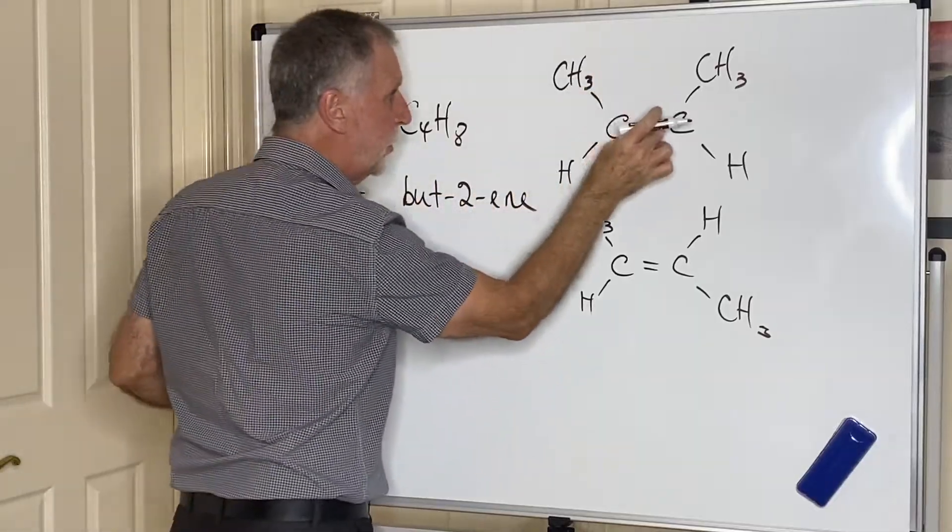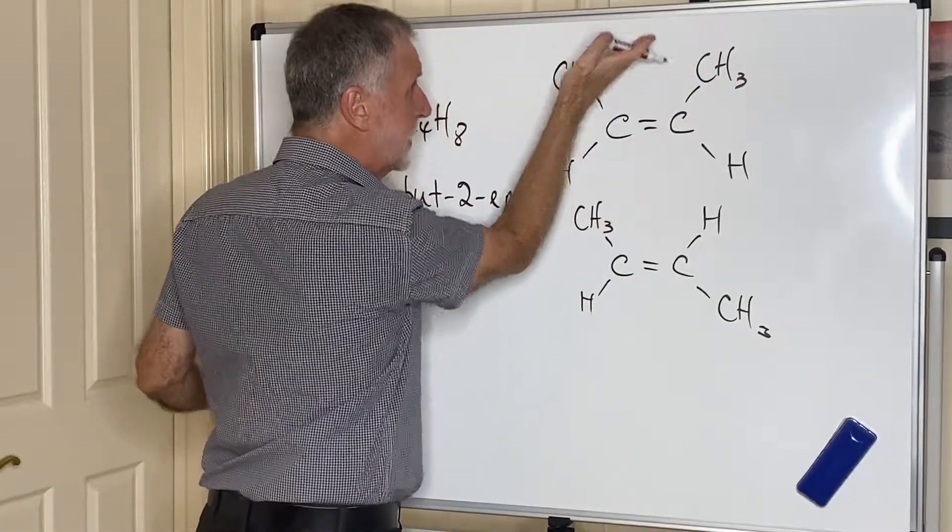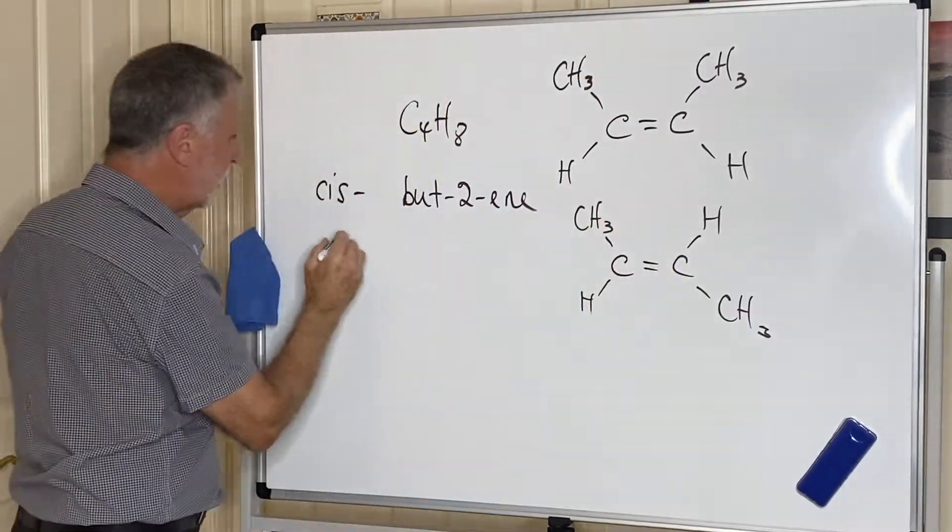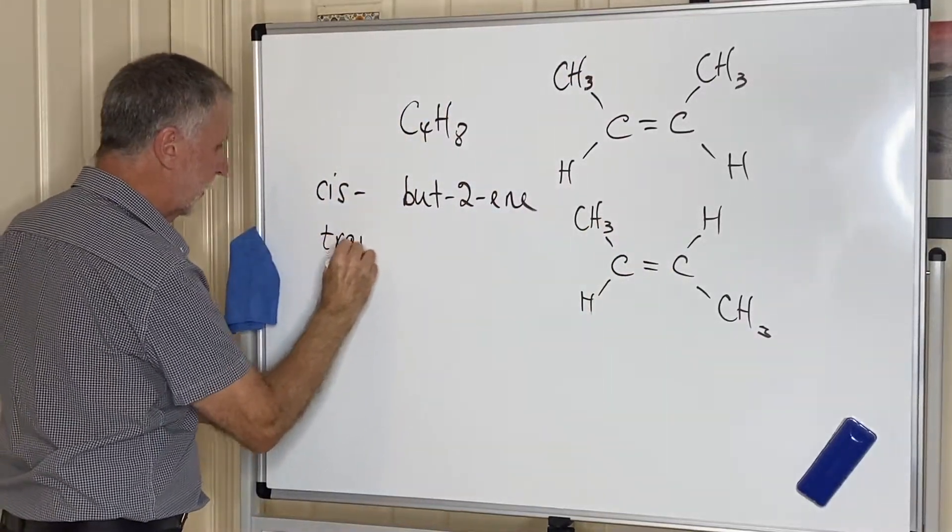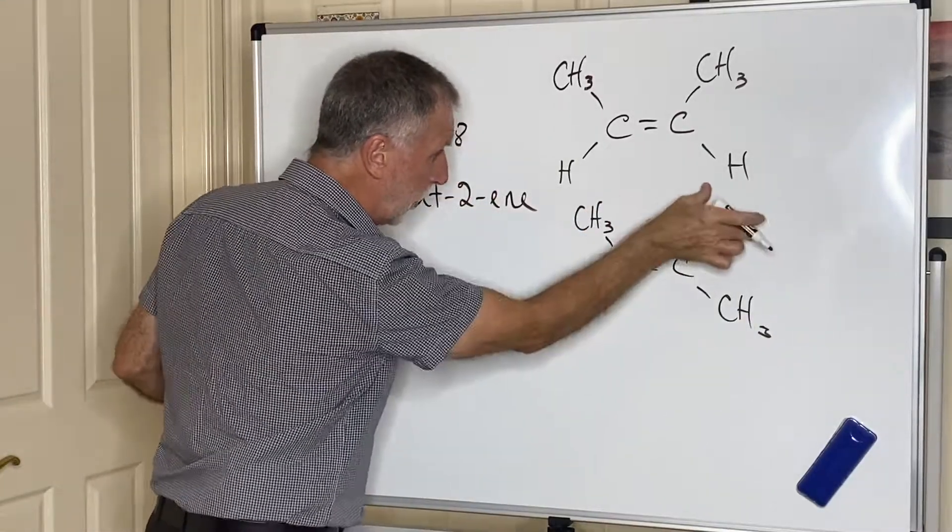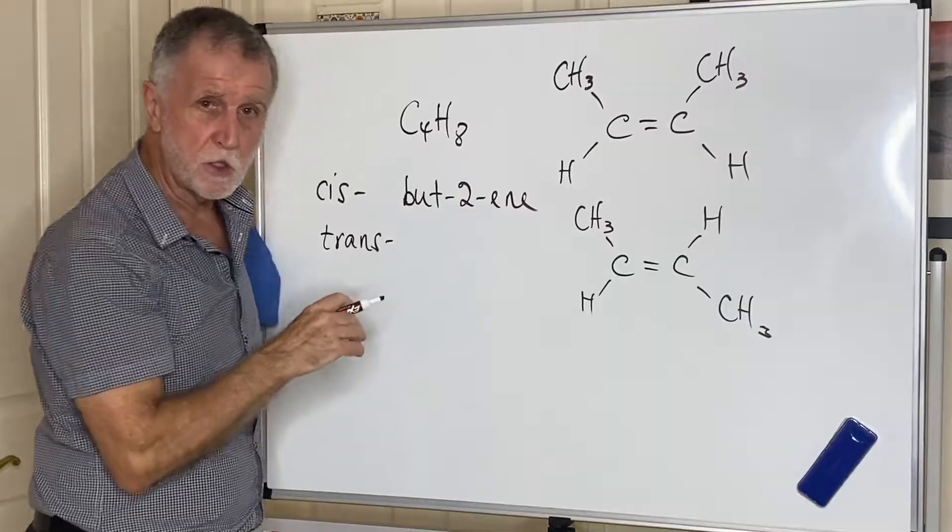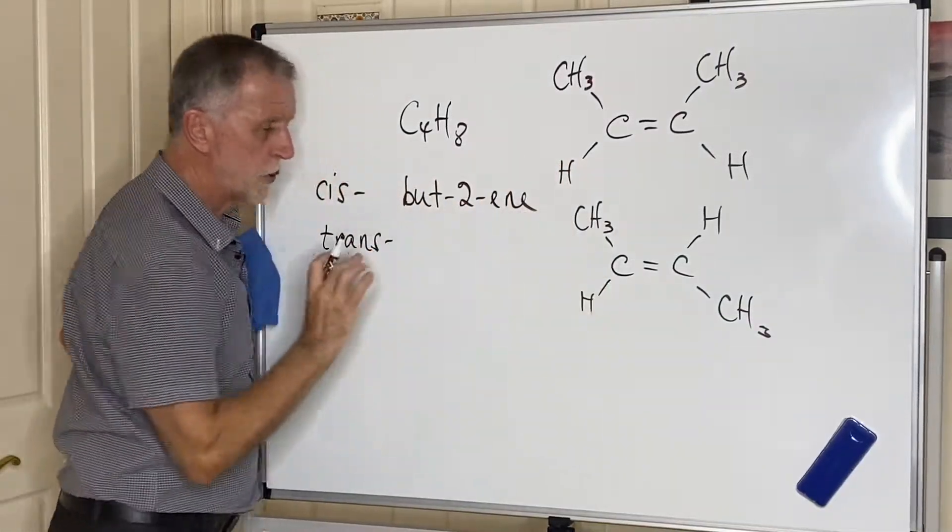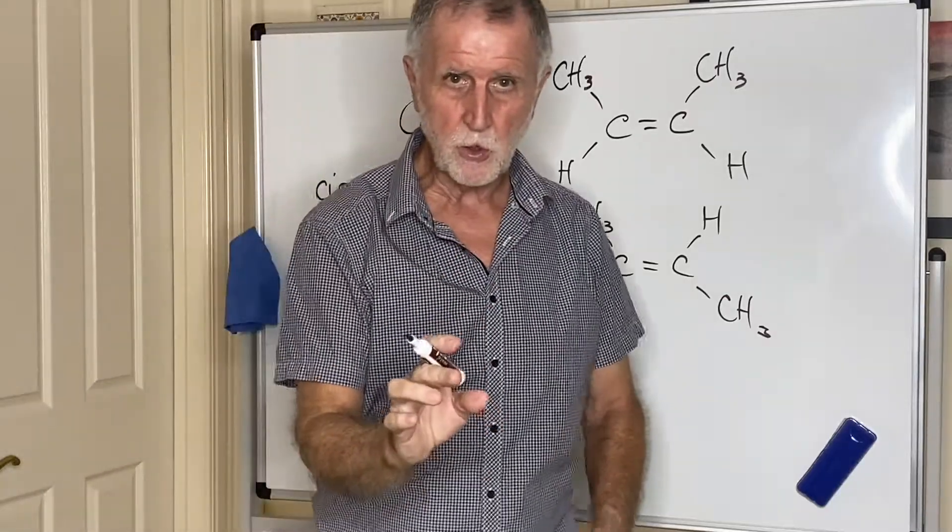Because the two methyl groups or the two hydrogens are on the same side of the double bond, and this is called the trans isomer where the methyl groups or the hydrogens are on opposite sides of the double bond. So cis-but-2-ene, trans-but-2-ene, geometrical isomers.